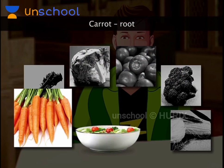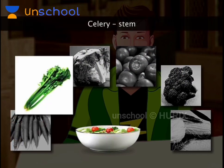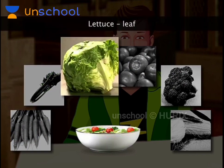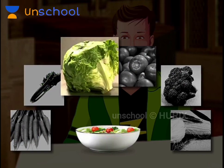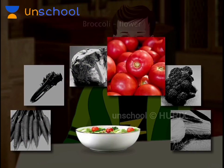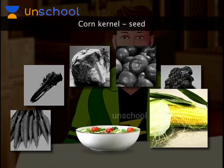Carrot is a root. Celery, a stem. Lettuce is a leaf. Tomato is a fruit. Broccoli is a flower. And corn is a seed.